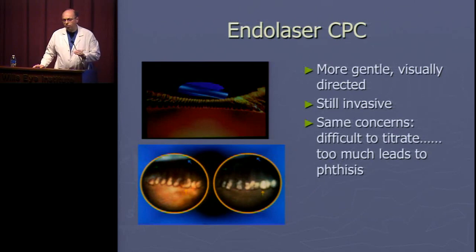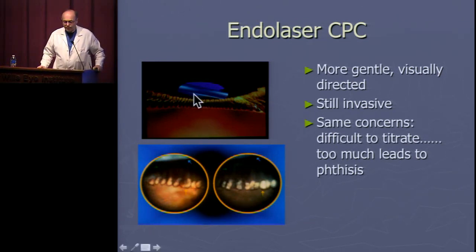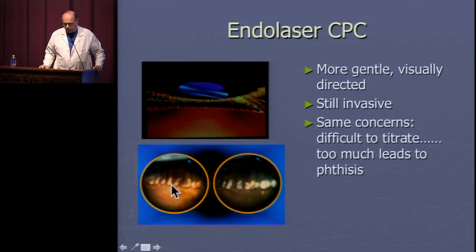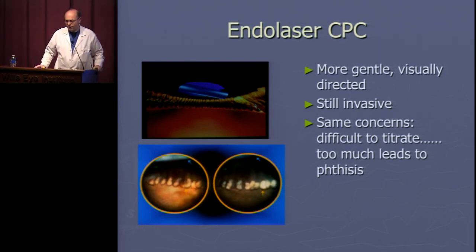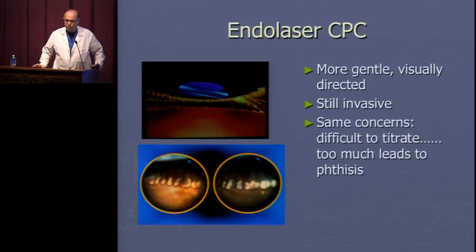The second approach is endoscopic cyclophotocoagulation, which aims laser directly at the ciliary processes. You enter the eye, inflate with viscoelastic, and slip in an endoscope probe. On the TV monitor you see the ciliary processes turn white and shrivel with laser application. You treat as many as possible — 360 degrees gives better pressure control than 180 but increases phthisis risk, so many surgeons treat 270 degrees and assess the response. This is an invasive procedure with risks including endophthalmitis.